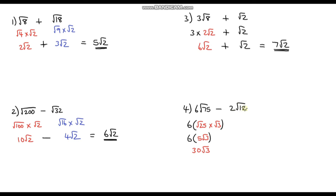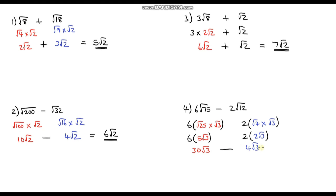Now for the right-hand side: 2 root 12. We put our 2 out front and simplify root 12. Root 12 is the same as root 4 times root 3, and the square root of 4 is 2, so this is 2 root 3. Multiplying by 2 gives us 4 root 3. We can now subtract because both terms have root 3: 30 root 3 minus 4 root 3 leaves us with 26 root 3. That is our final answer.